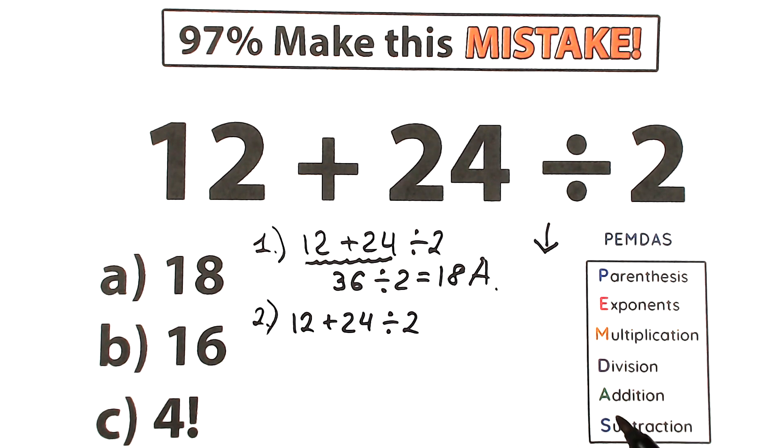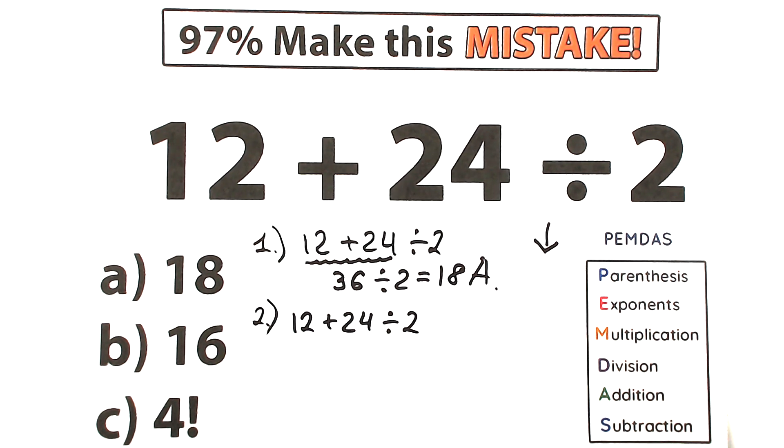So the first step, parenthesis, then exponent, then we should evaluate multiplication, division group, and the last step is addition and subtraction group. So higher position, higher priority, lower position, lower priority. This is how it works.